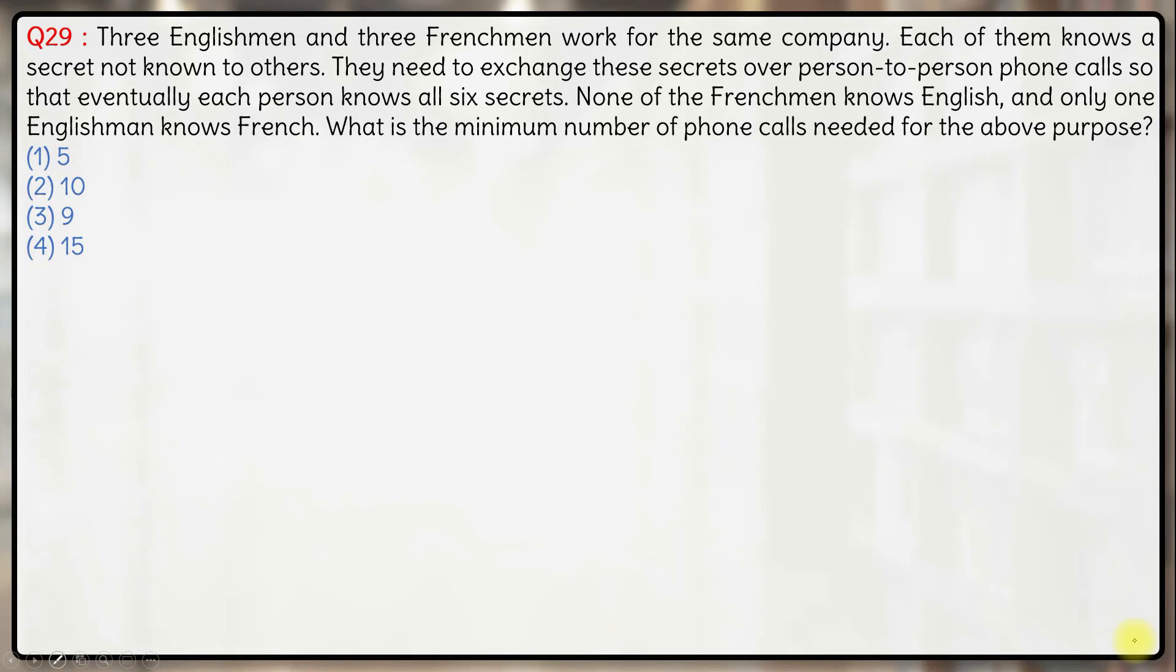In this question we have three Englishmen and three Frenchmen. They work for the same company. Each of them knows a secret not known to others. They need to exchange these secrets over person-to-person phone calls so that eventually each person knows all six secrets.